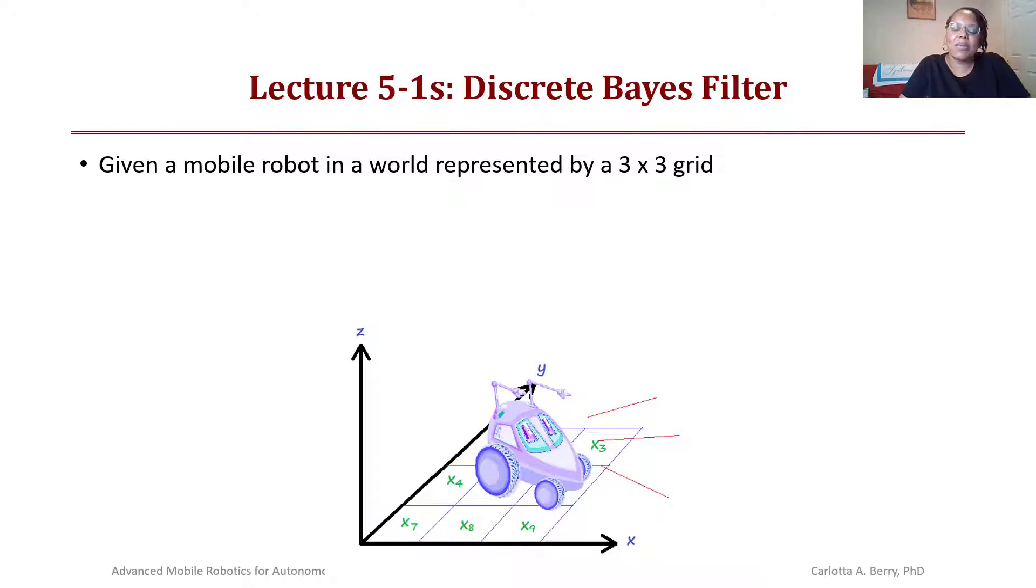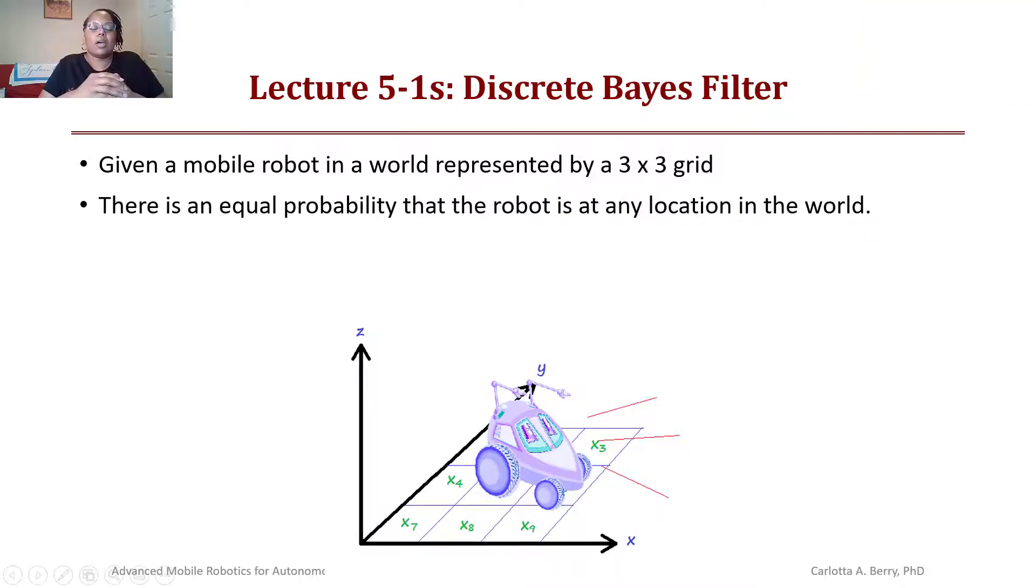Hello and welcome back. Today we will do an example of a discrete Bayes filter from lecture 5-1. Given a mobile robot in a world represented by a three by three grid, we are going to assume that there's an equal probability that the robot is at any location in the world.